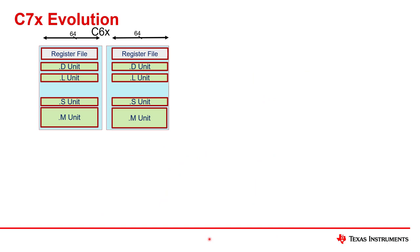Now consider another diagram — this one is of a C6000, because what we're going to show here is how C6000, the predecessor to C7000, evolves into C7000. This is particularly good for those of you who know C6000, but if you don't, there are still a lot of architecture concepts introduced in this evolution that make it a good way to learn.